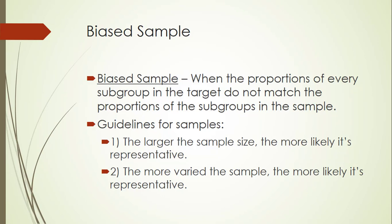Second, the more varied the sample, the more likely it's representative. Have some variety within the sample to make it more representative. So you could hand some out at a Republican convention and some at a Democratic convention — you vary it up — and there will be a greater likelihood that the sample will be representative.